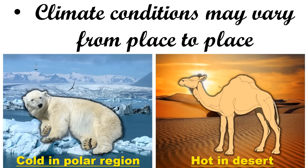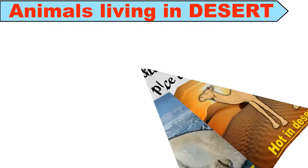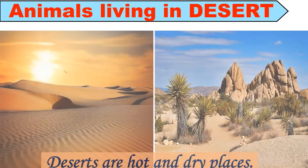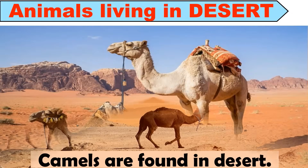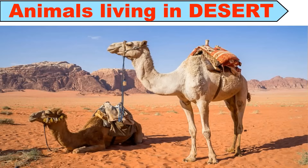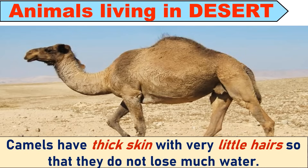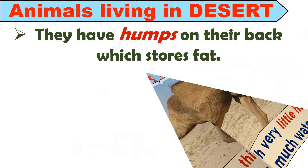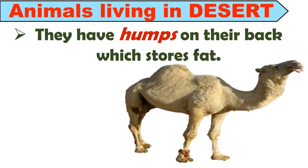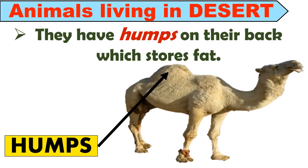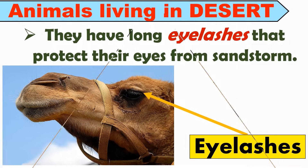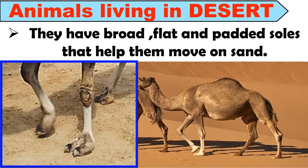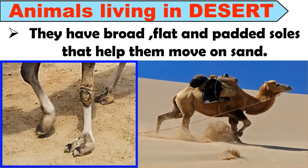Let's see how some animals adapt to survive in different climate conditions. Deserts are hot and dry places, and animals like camels are found here. Desert animals have special features to prevent water loss. Camels have thick skin and very little hair so they do not lose much water. They have humps on their back which store fat, providing energy when they cannot eat for a long time. They have long eyelashes to protect their eyes from sandstorms, and broad, flat, padded soles that help them move on sand without sinking. Camels are also known as the ship of the desert.